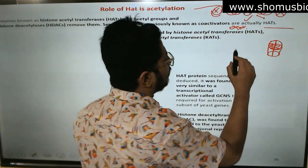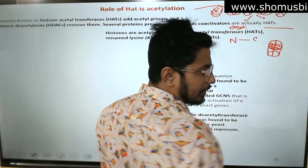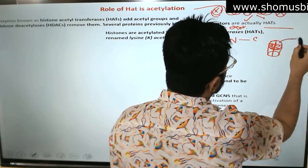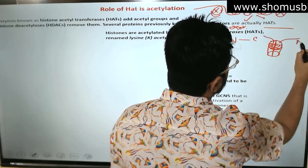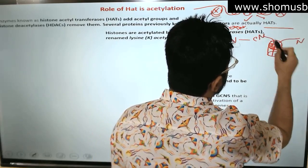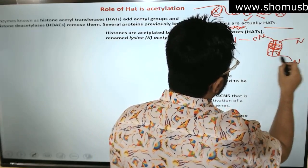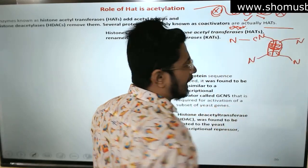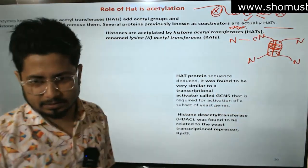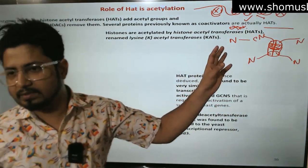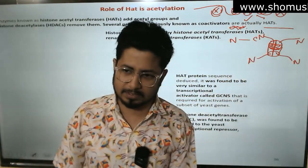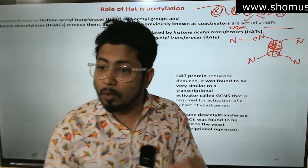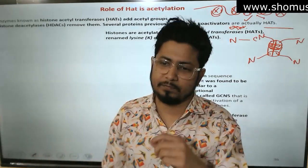These histone proteins have an N-terminal and C-terminal. The N-terminal sites of histones are filled with lysine-rich residues of amino acids. Those lysine-rich residues are subjected to chemical modifications such as acetylation.